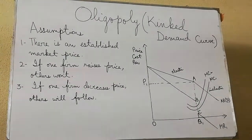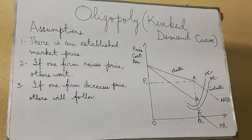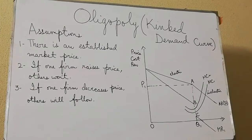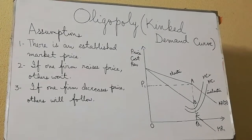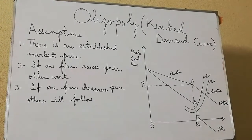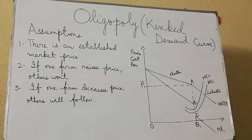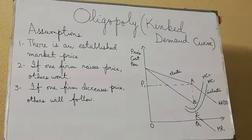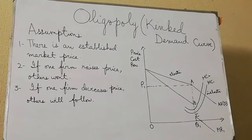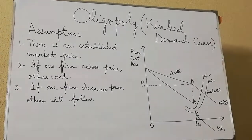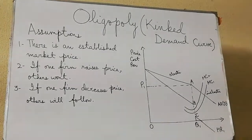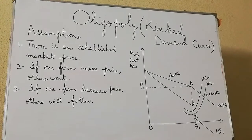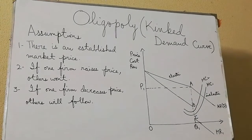But if one firm raises its price in an attempt to gain more market revenue, the other firms would not follow. However, if one firm decreases its price to gain more sales or profit, all the other firms will follow this strategy. This means that neither lowering nor raising the price benefits the firm, which is why we see price rigidity and stability in the case of oligopoly.